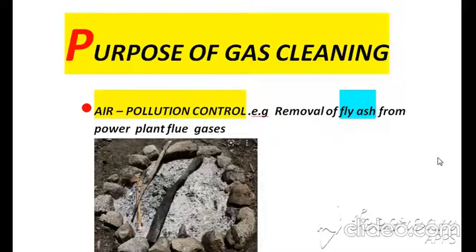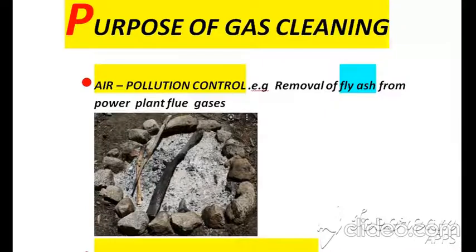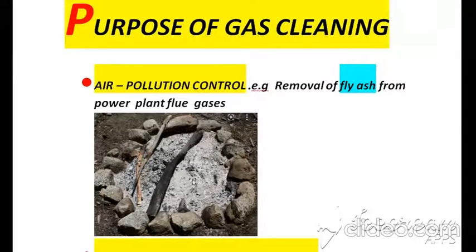According to the purposes of gas cleaning, the first one is air pollution control. After the combustion process, removal of fly ash from power plant flue gases will control air pollution. That fly ash powder you are observing in the diagram — that white powder is called fly ash.